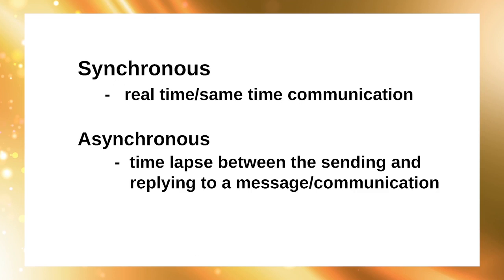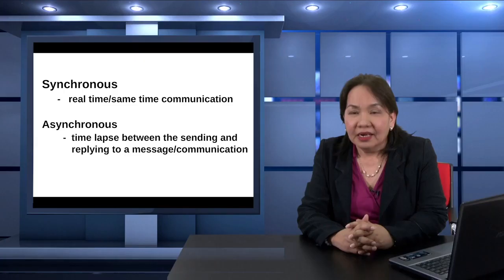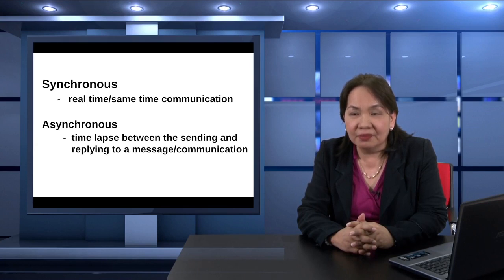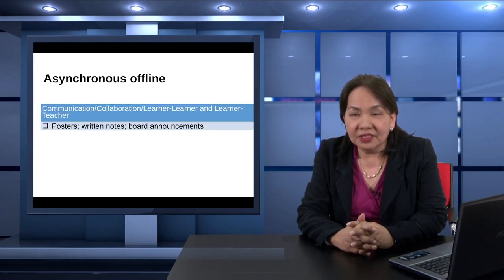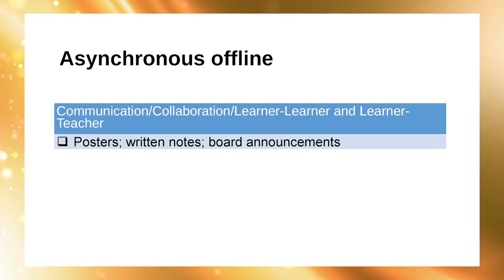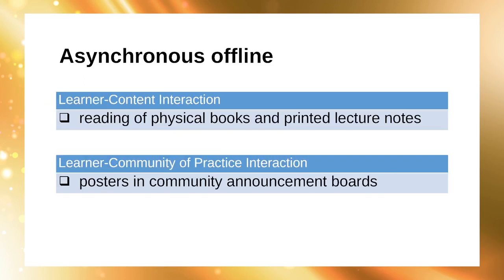Synchronous means real-time or working together simultaneously, while asynchronous implies a time lag in the interaction. Synchronous learning can be carried out in both online and offline environments. In an asynchronous and offline situation, we can think of posters, written notes, and board announcements as modes of communication and collaboration, and also learner-learner and learner-teacher interactions. Learner-content interaction under this setting is through reading of physical books and printed lecture notes. For learner-community-of-practice interaction, I can only think of posters in community announcement boards.